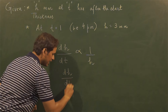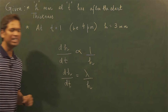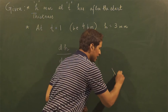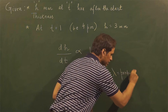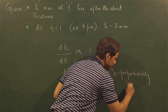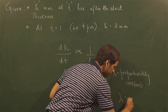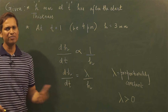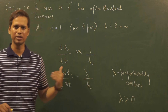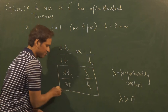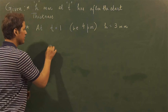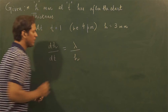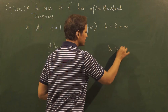Removing the proportionality symbol, I can put a proportionality constant and write it as dh/dt = λ/h, where λ is a proportionality constant. This λ must be positive in order to maintain that there is an increment in the height. So the required differential equation formed for this question is dh/dt = λ/h, with λ being a positive quantity.